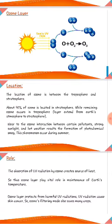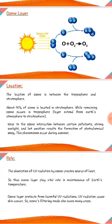The ozone layer is located between the troposphere and stratosphere. 90 percent of it is in the stratosphere, and the remaining 10 percent is in the troposphere near the surface.